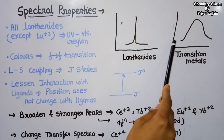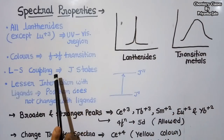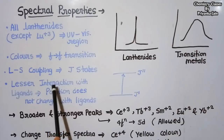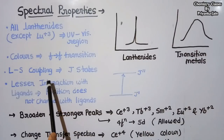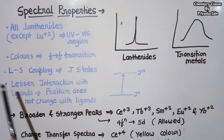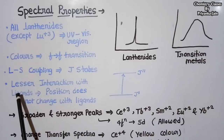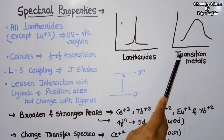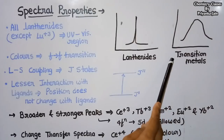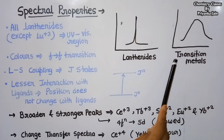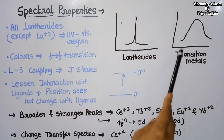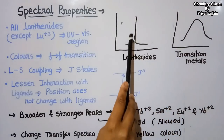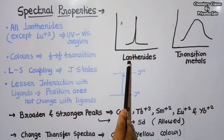In lanthanides, the f orbital is deeply embedded inside the atom and cannot interact with the outermost ligands, so the positions of spectral signals do not change when ligands are changed. In contrast, in transition metals the d orbital electrons interact with the ligands, so signal positions can change from ligand to ligand. Due to their sharp peaks, lanthanides are generally used for wavelength calibration.